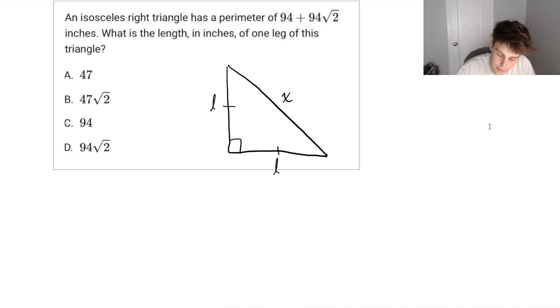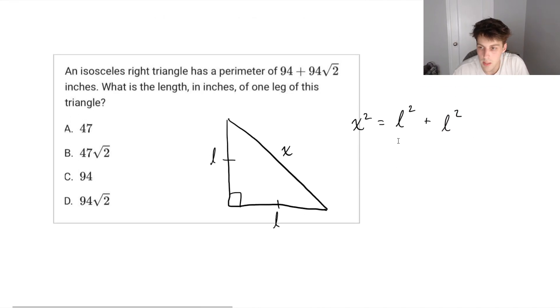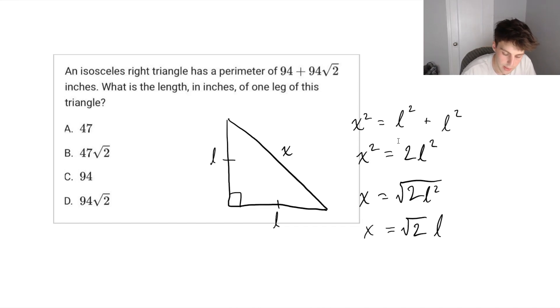You might already know what I'm going to do here, but if you don't, let's just say that we don't know what this hypotenuse will be, and that's going to be x. So from Pythagorean theorem, we know that the hypotenuse squared should be equal to the sum of the side lengths squared. So length squared plus length squared. So x squared is going to be two length squared. Taking the square root of both sides, we can now get square root of two times L. So x is just square root of two times one of our side lengths in our isosceles triangle.